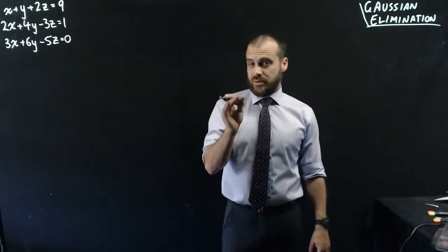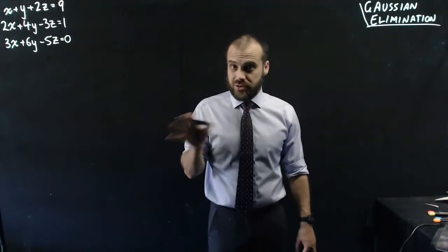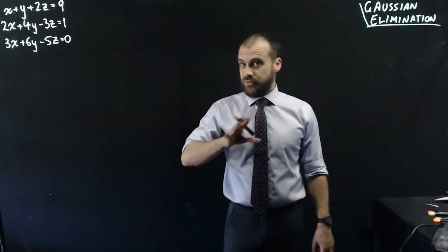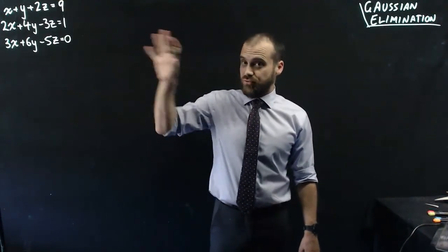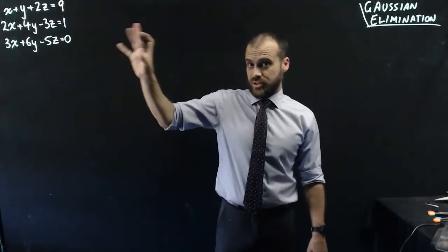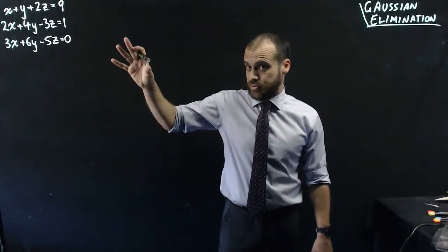Now Gaussian elimination is something called an algorithm - it's just a series of steps. And if you follow these steps, you'll be able to find the solution to this system of equations.